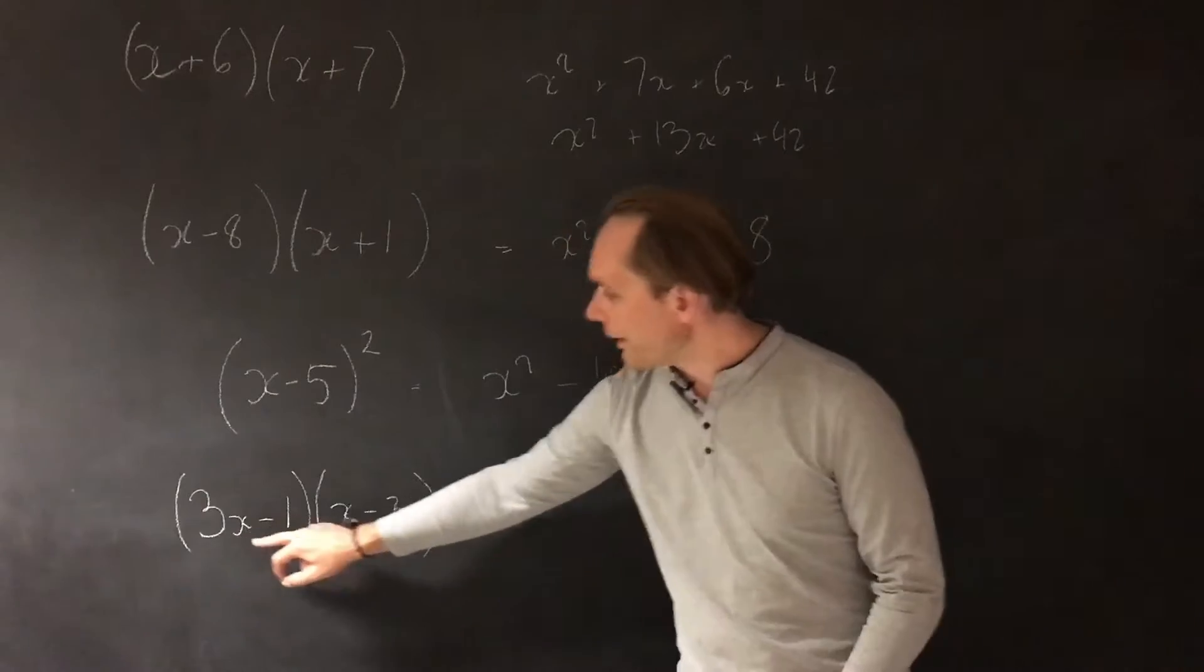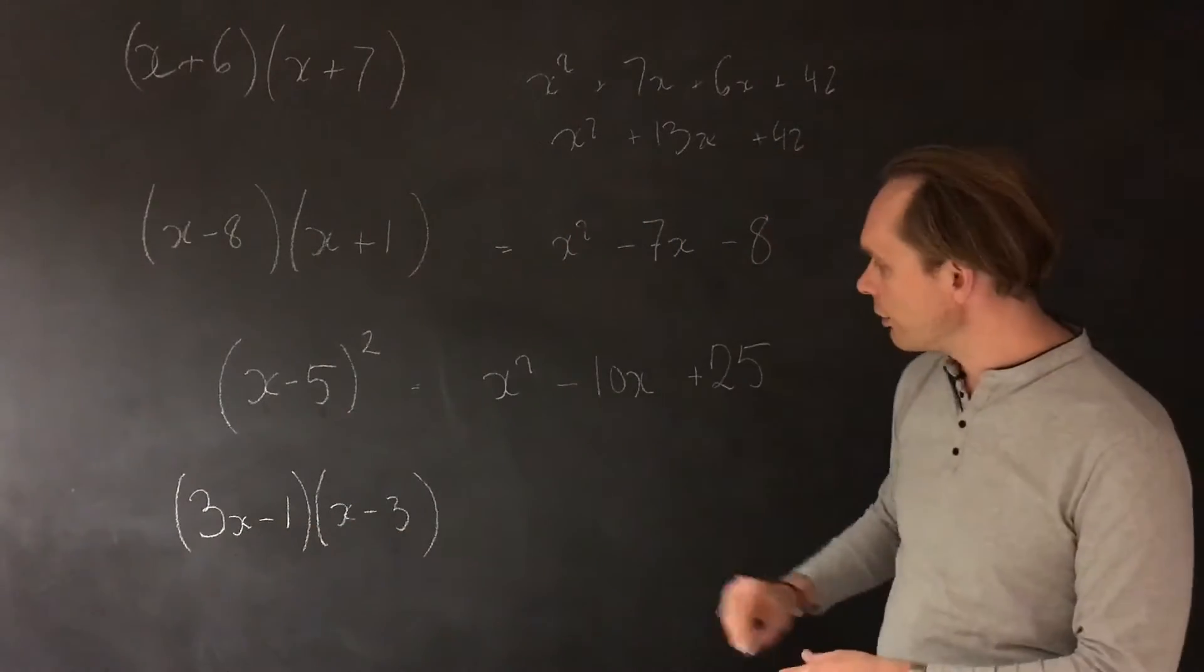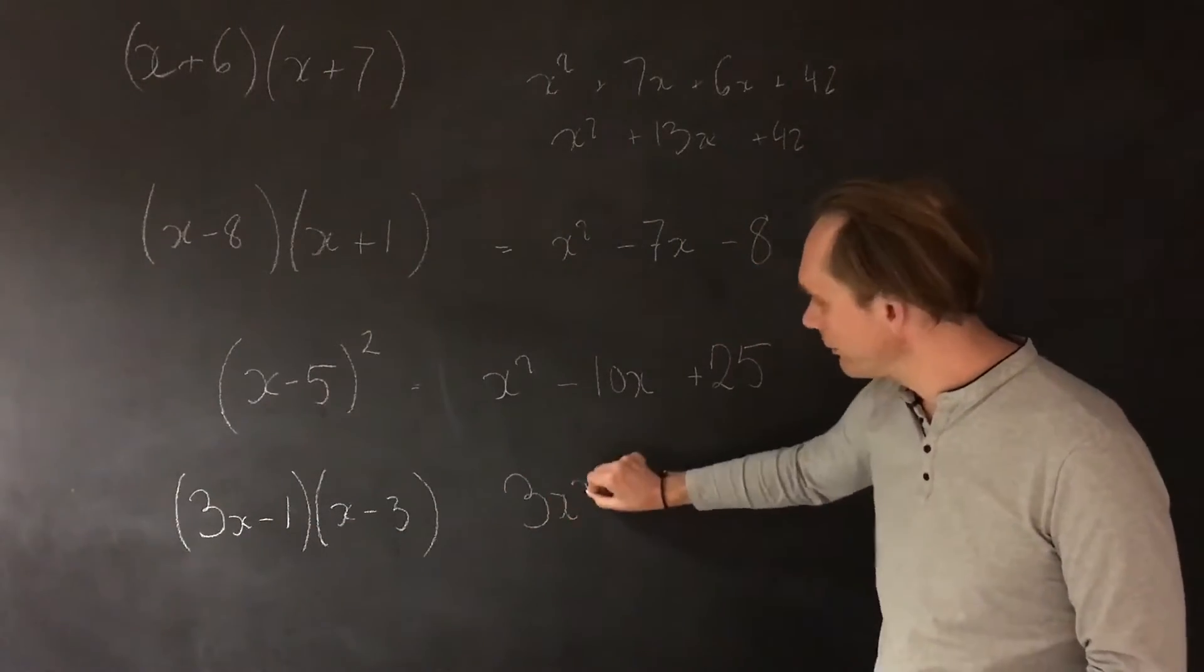We'll look at the first term, 3x and x. We multiply them together. You're not going to get x squared. You're going to get 3x squared.